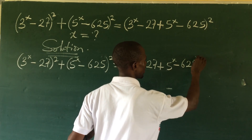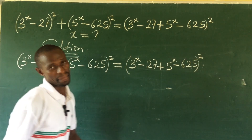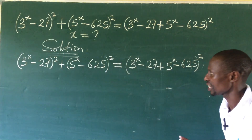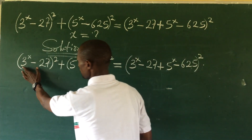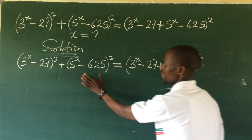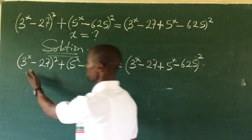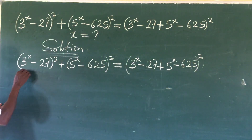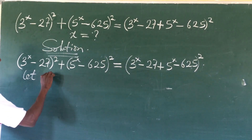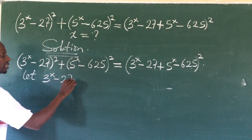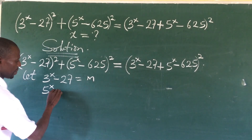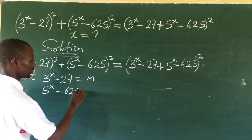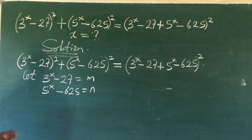If you look at this system of exponential equations, you discover a little recurrence of terms. What we have in one place is also repeated elsewhere. So we can bring in another alphabet to represent these terms. Let: 3^x − 27 = m, and 5^x − 625 = n.